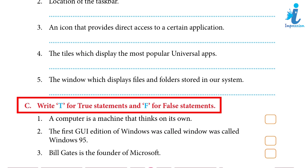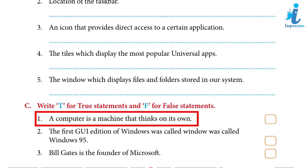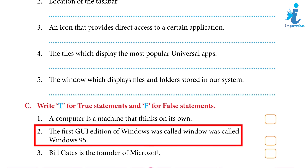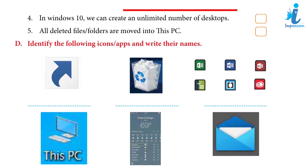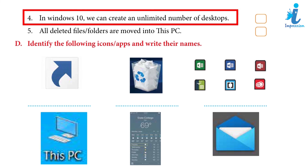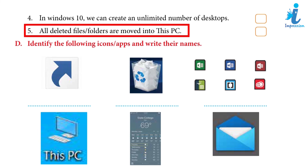True or False: 1. A computer is a machine that thinks on its own — False. 2. The first GUI edition of Windows was called Windows 95 — True. 3. Bill Gates is the founder of Microsoft — True. 4. In Windows 10, we can create an unlimited number of desktops — False. 5. All deleted files and folders are moved into This PC — False.